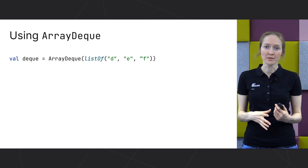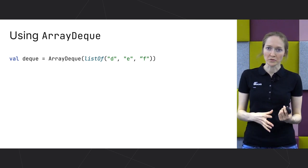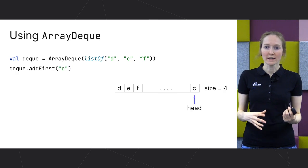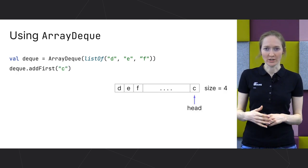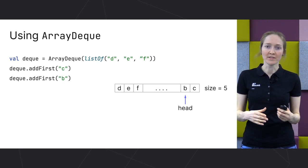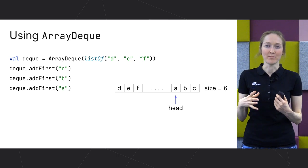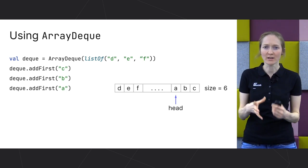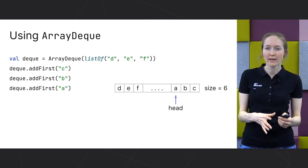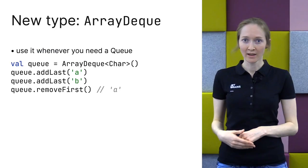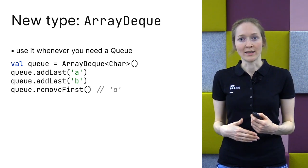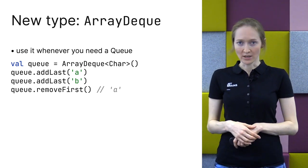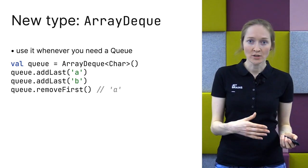The ArrayDeque implementation uses a resizable array underneath. It stores contents in a circular buffer and resizes the array only when it becomes full. When you add a new element to the head of the array, it adds it before the first element if space is available, and only moves the head pointer and changes the size. That's why adding new elements to the beginning works in constant time for most cases — much faster than ArrayList, which needs to move all elements. If you need queue functionality — a data structure that allows adding elements to the end and retrieving from the beginning — use ArrayDeque. It provides an efficient implementation of these methods under the hood.